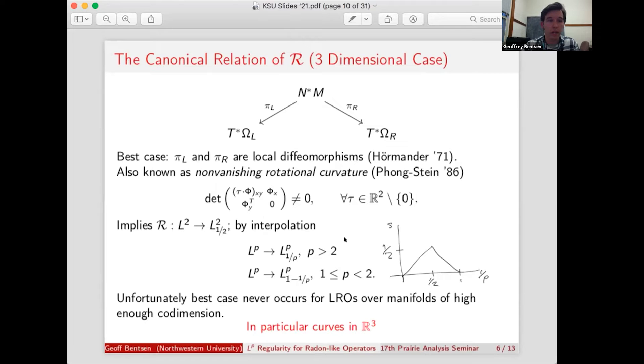Now, if this were true, if the rotational curvature is non-vanishing, then r would gain half a derivative on L2. And by interpolation with our LP bounds, we get 1 over P derivative gain for P greater than 2 and 1 minus 1 over P derivative gain for P between 1 and 2. And there are examples that show that this cannot be improved beyond. So every LP Sobolev regularity result has to lie inside of this triangle.